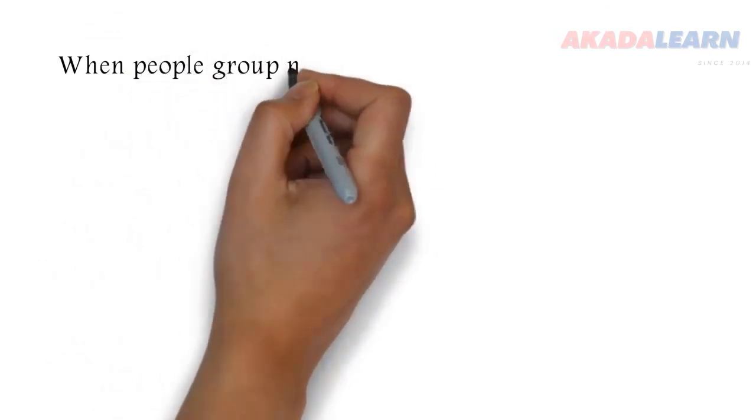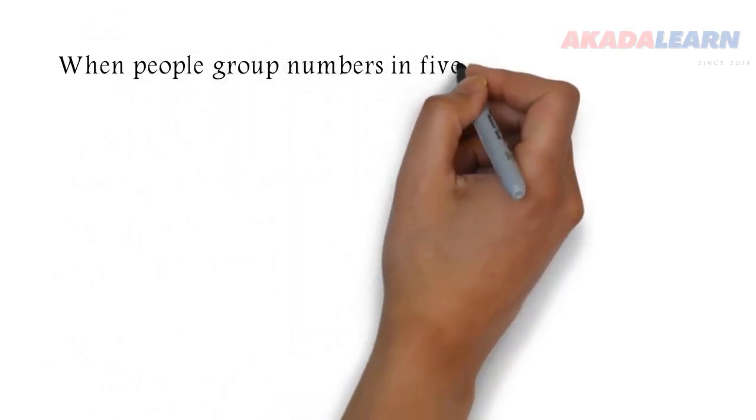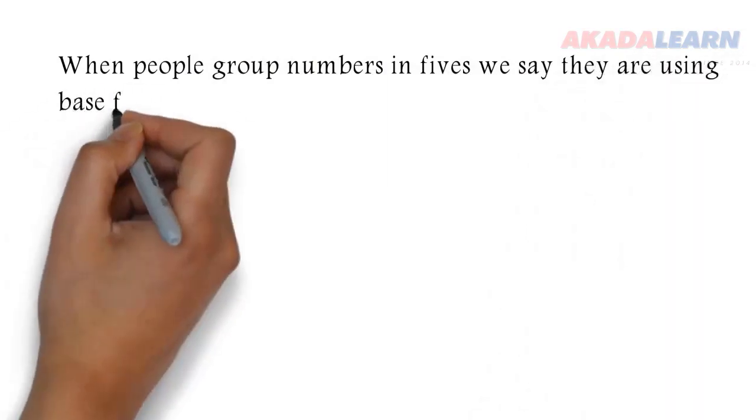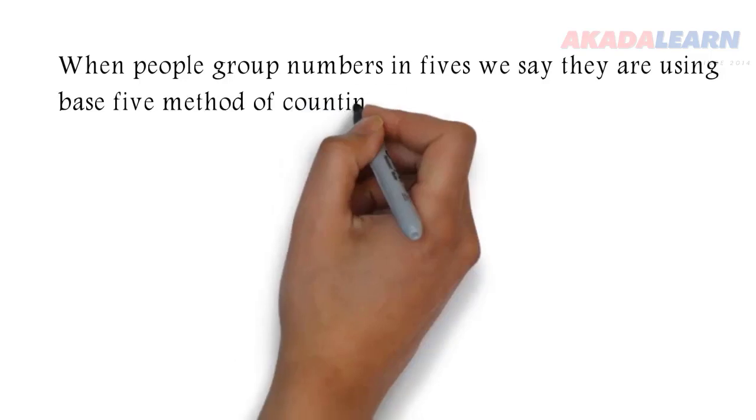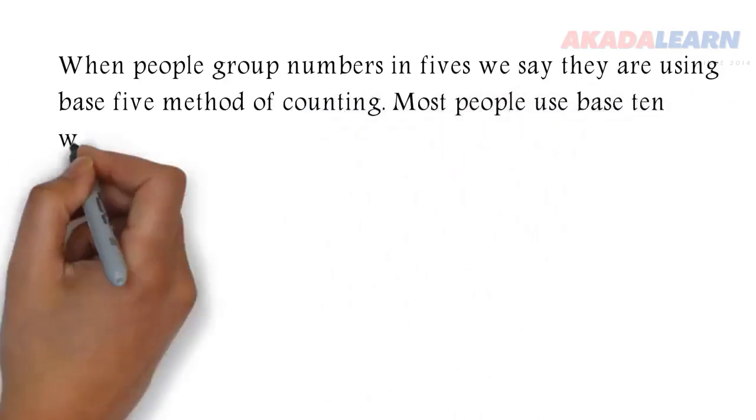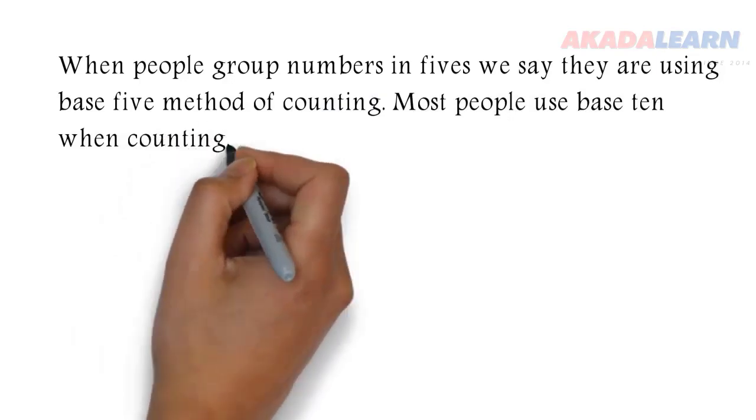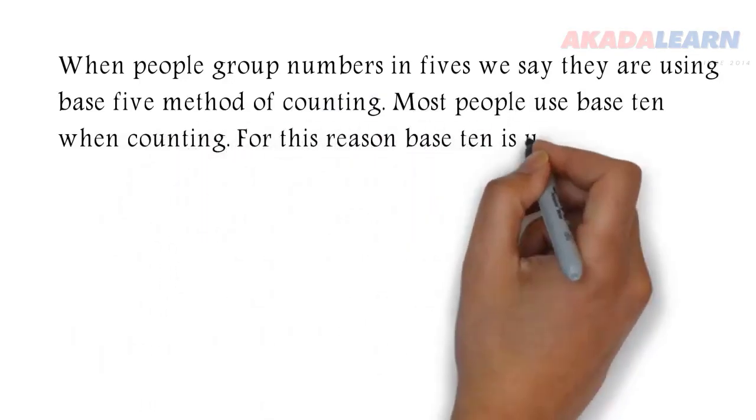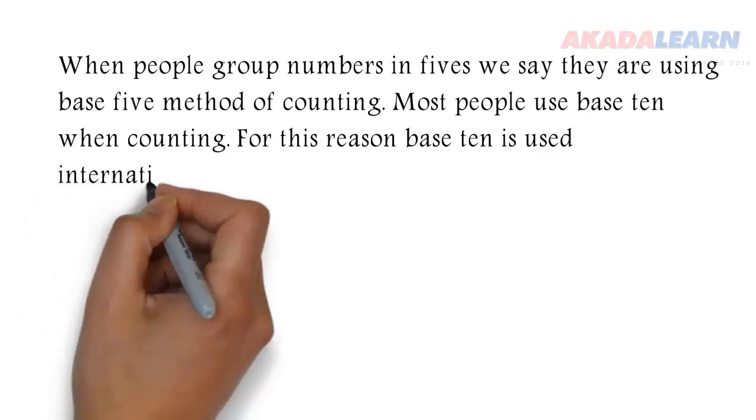When people group numbers in fives, we say they are using base 5 method of counting. Most people use base 10 when counting. For this reason, base 10 is used internationally.